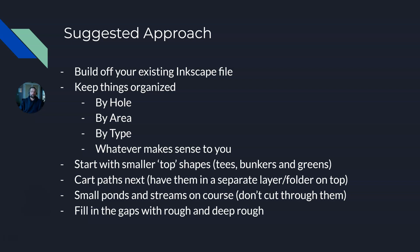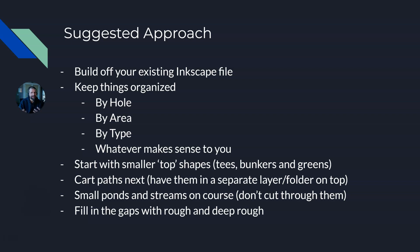My suggestion is to start with the smaller top shapes — the tees, the bunkers, and the greens. Go through your whole course and do your tees, bunkers, and greens. Make sure to periodically send them through Blender, make sure they're cutting correctly, and make sure you're getting a mesh file out of that. The reason I like to do that is because they're small, and when you create those you can still see your satellite underlay underneath. You don't have to hide them to draw the other shapes. For example, if you started drawing all your fairways first, they would often cover up your tees, bunkers, and greens. So that's why I say draw the smaller stuff first.